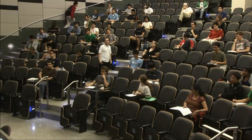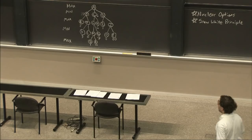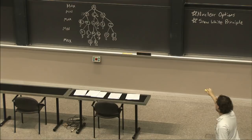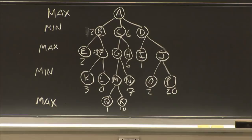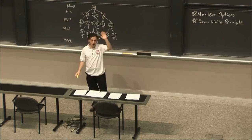Our path is A, C, H. Is everyone good with Minimax? Most people usually are, but if you'd like some clarification on Minimax, raise your hand.